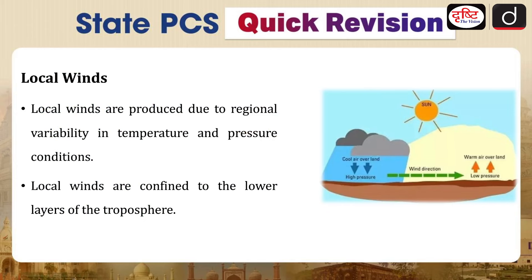When we talk about local winds, one important factor is size. Local winds refer to a specifically smaller area, having regional variations in temperature and pressure. Local winds are produced due to regional variability in temperature and pressure in a particularly smaller area, and they are confined to the lower layers of the atmosphere.